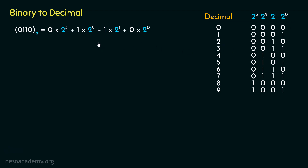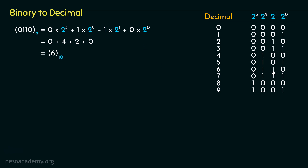Now we add these up: 2 cubed multiplied by 0 gives 0; 2 squared is 4, multiplied by 1 gives 4; 2 to the power 1 is 2, multiplied by 1 gives 2; and 2 to the power 0 multiplied by 0 gives 0. So 0 + 4 + 2 + 0 = 6 in decimal. This is why the shortcut works — we only consider place values under the ones, because the rest are multiplied by zero.